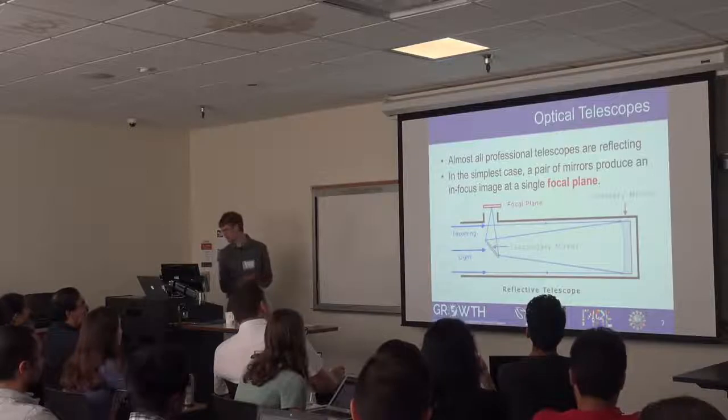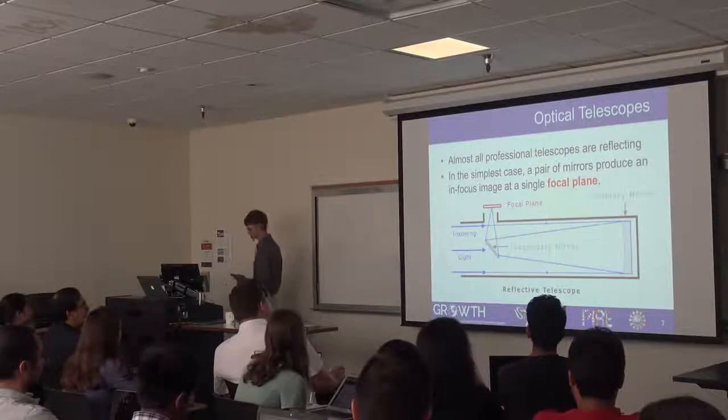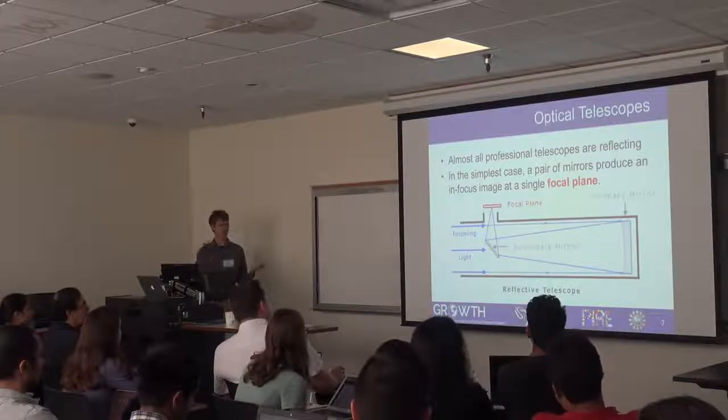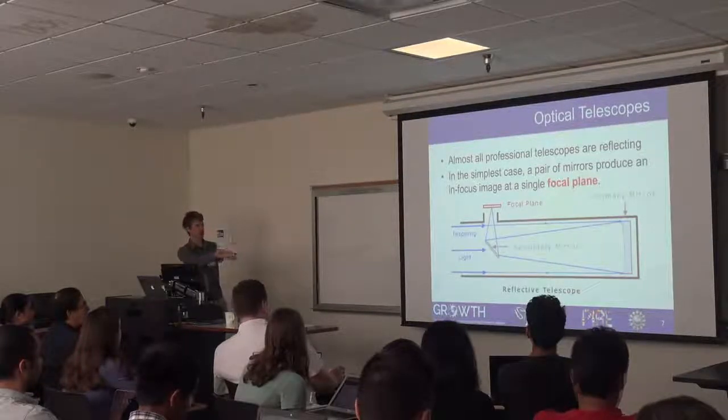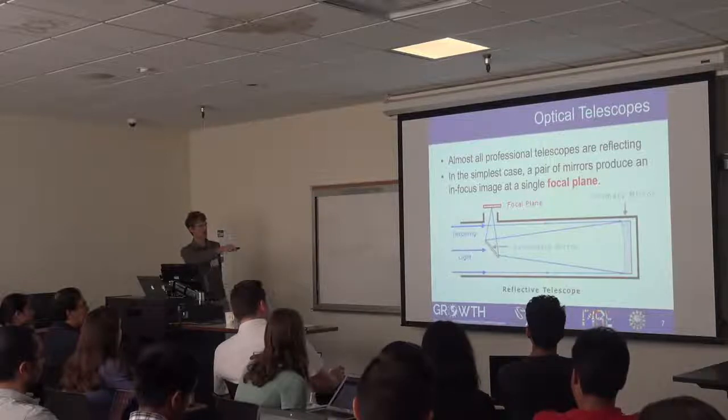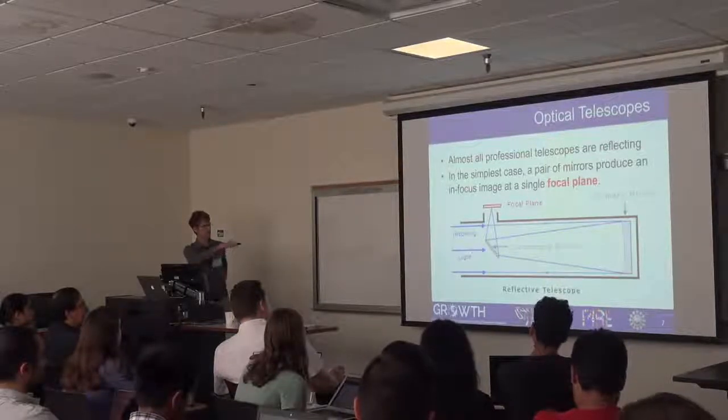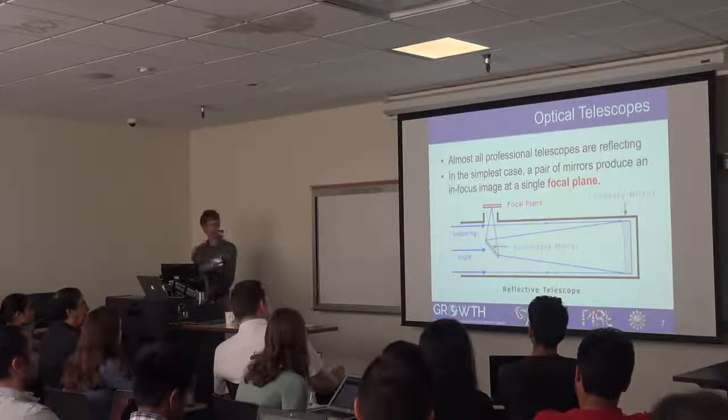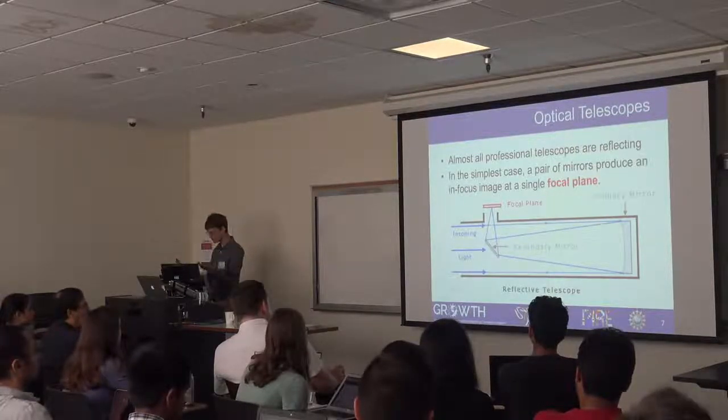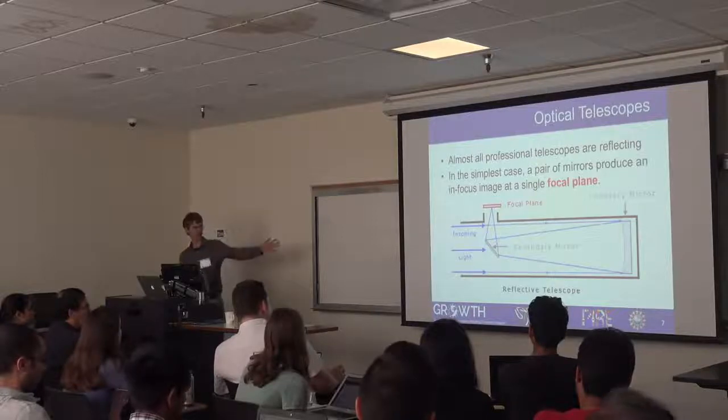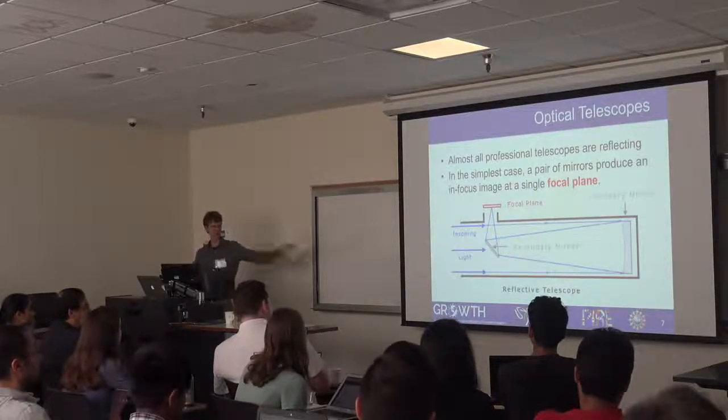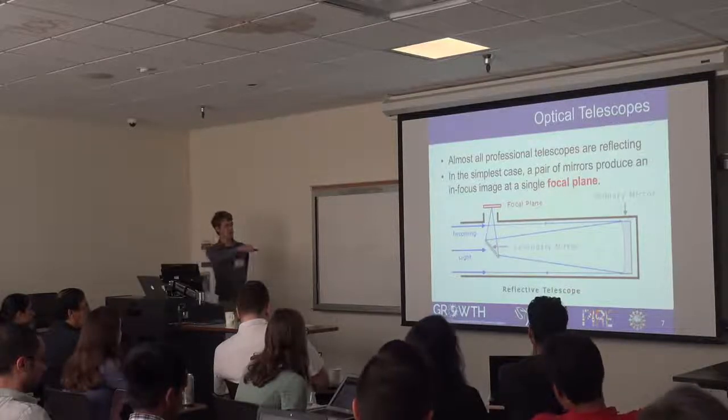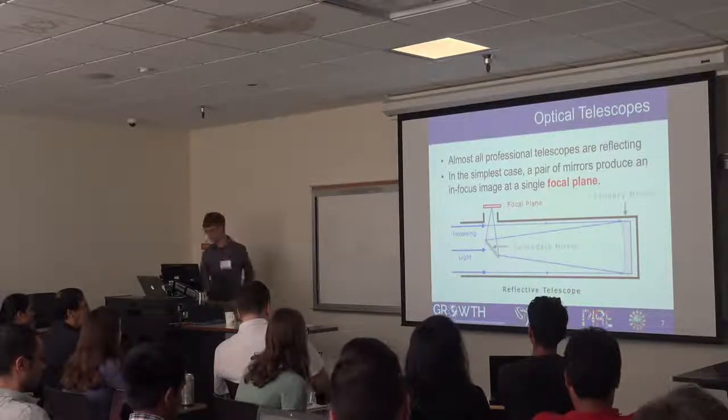This is basically all I'm going to tell you about telescopes. I assume most of you are familiar with how telescopes work. There's mirrors, they focus light, they collect light, and put it onto a detector, which is located at the focal plane where incoming light in parallel rays is brought to a specific focus. And that's essentially all you need to know - there's a telescope and it has a focus, and that's where we put the detector.